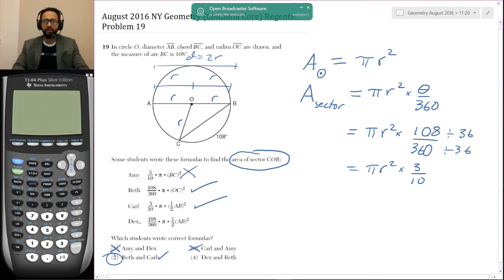Let's just make sure that Dex is wrong. He has 108 over 360 and he has the pi. And then he has one half of AB squared. So this is subtle. Why is he wrong? A lot of students have the habit of multiplying before they square. When PEMDAS, the rules of order of operation say that an exponent is performed before multiplication or division. So the squaring happens with AB and then that is divided by two. That is not the same thing as dividing AB by two and then squaring it. So Carl is correct and Dex is definitely wrong.